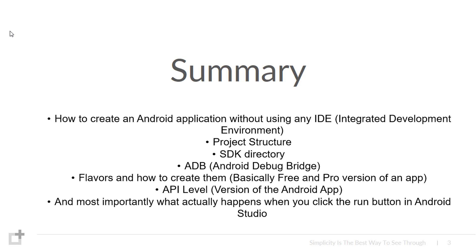I'm going to talk about flavors — these are very fun things. I'm going to entirely use the command prompt and a simple text editor like Sublime Text or Notepad++, whatever works for you. Flavors basically means you are creating free and pro versions of an app in a single project. If you don't want to create multiple apps just for free and pro versions, you stick with one app and using Android flavors you can create basic and pro versions. We are also going to talk about the API level — the Application Programming Interface — which is fun stuff.